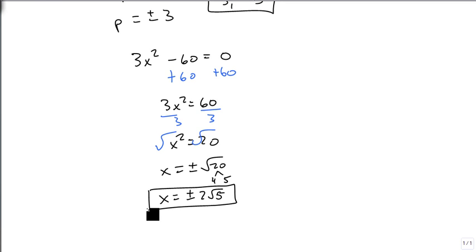And then we simplify. Square root of 20 is 4 and 5. Square root of 4 is 2. Square root of 5 stays inside. So we get two answers plus 2 square roots of 5 and minus 2 square roots of 5. And the order doesn't matter. If I put the negative first, I'd still get this correct.